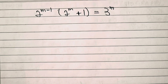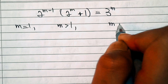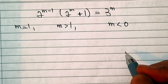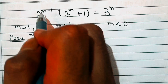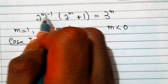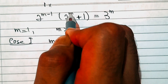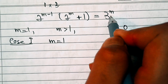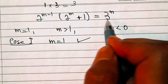Now three cases arise: Case 1 is m = 1; Case 2 is m > 1; Case 3 is m < 0, since m ≠ 0. For Case 1, putting m = 1: the left side is 2^(1-1) · (2^1 + 1) = 2^0 · 3 = 1 · 3 = 3, and the right side is 3^1 = 3. Both sides are equal, so m = 1 is the first solution.